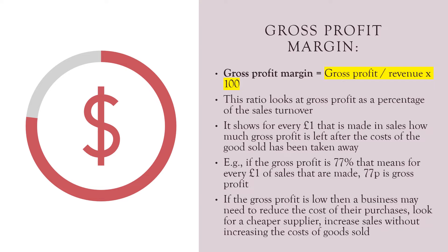So gross profit margin. Gross profit margin is gross profit divided by revenue times by 100. This ratio looks at gross profit as a percentage of the sales turnover. So for every one pound that is made in sales, how much gross profit is left after the cost of the goods sold has been taken away.